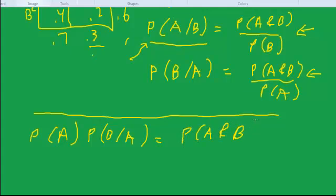And we get this: the probability of A and B equals the probability of A times the probability of B given A. Okay, so now we have something for P(A and B) that we're going to substitute back up here.